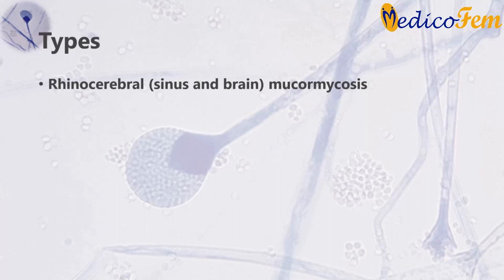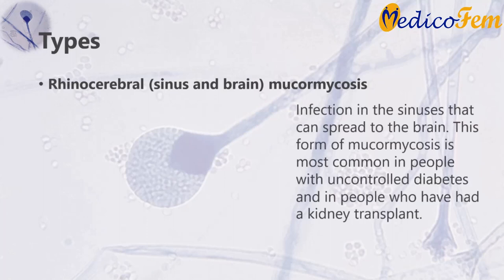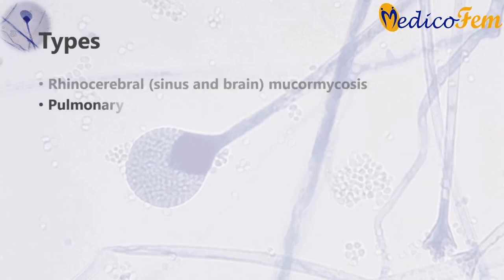Rhinocerebral mucormycosis is an infection in the sinuses that can spread to the brain. This form of mucormycosis is most common in people with uncontrolled diabetes and in people who have had a kidney transplant. Pulmonary or lung mucormycosis is the most common type of mucormycosis in people with cancer.